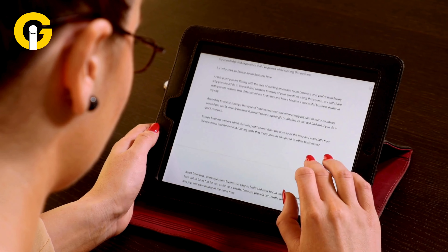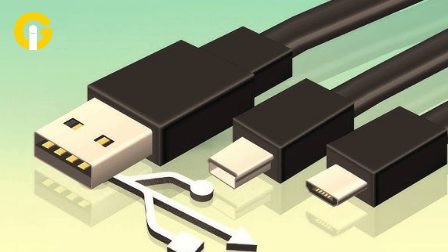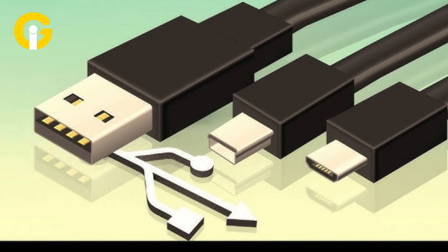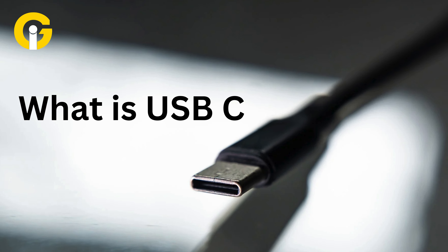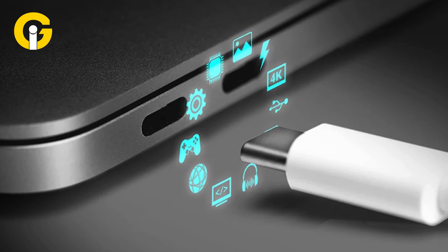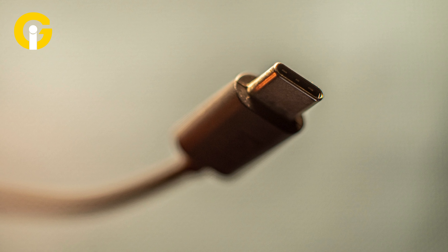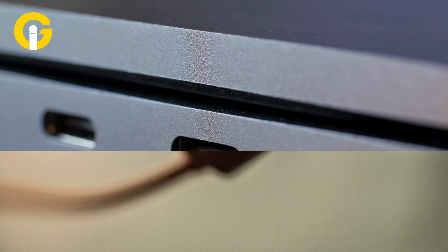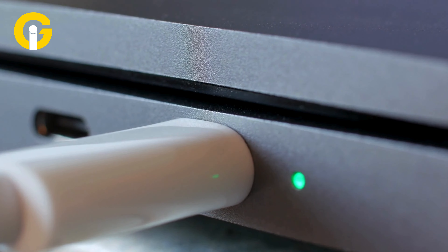In this article, we'll compare the two most common USB types: USB-C and USB-A. So what is USB-C? USB-C is the latest generation of USB connectors, which was introduced in 2014. It has a small, thin, and oval-shaped design that's reversible, meaning you can plug it in either way without worrying about the orientation.